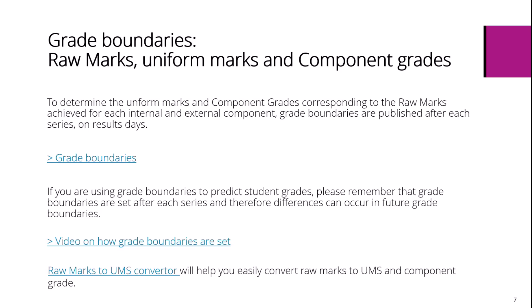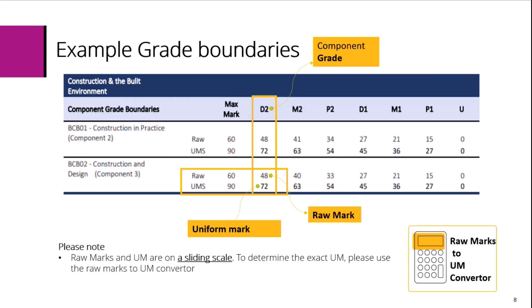The raw marks to UMS converter will help you easily convert raw marks to uniform marks and the component grade. Here is how grade boundaries look — this example is from construction. The grade boundaries show the minimum raw marks and the corresponding uniform mark for each grade. Raw marks and uniform marks are on a sliding scale. To determine the exact uniform marks, the raw marks to UMS converter can be used, accessible via the link on this page.